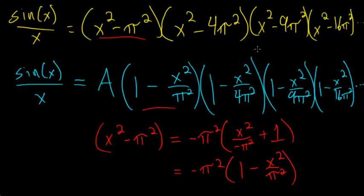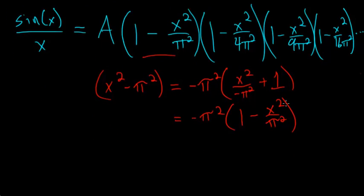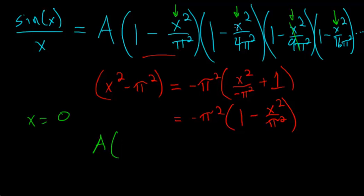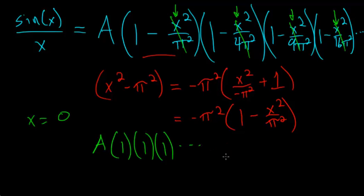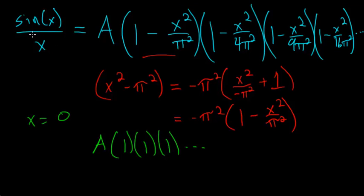To determine A, we set x = 0. On the right-hand side, every term of the form (1 − x²/…) becomes 1, so we're left with A multiplied by an infinite product of 1's. On the left-hand side, we need the limit as x → 0 of sine(x)/x, which is a well-known result from basic calculus equal to 1.